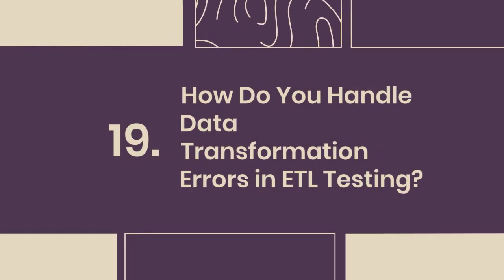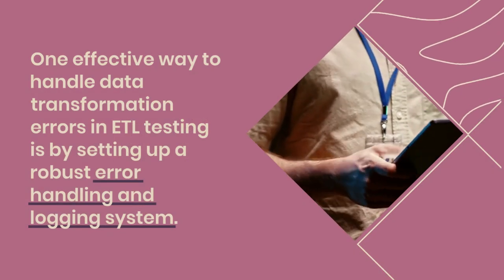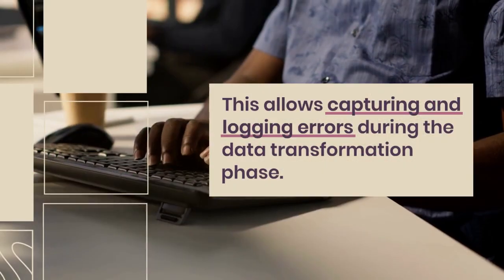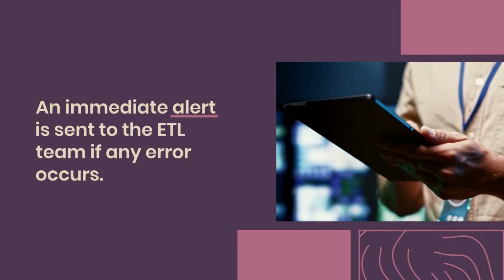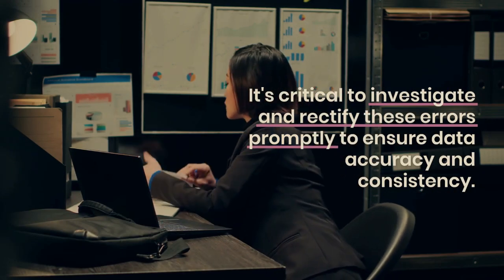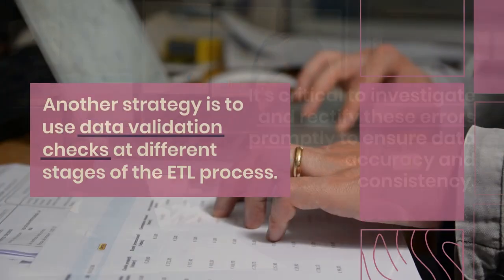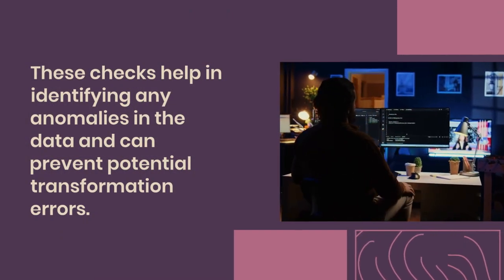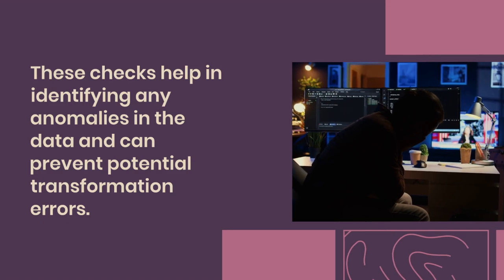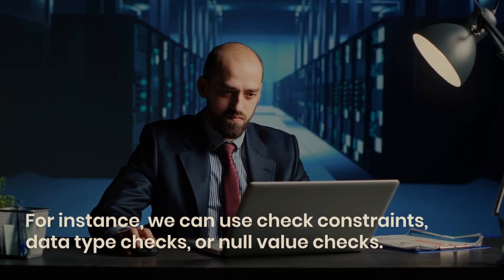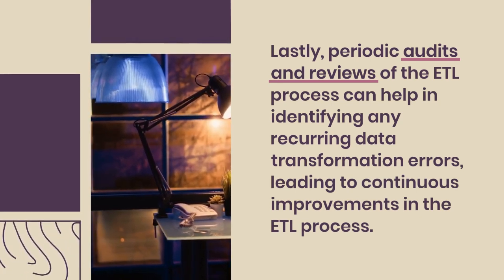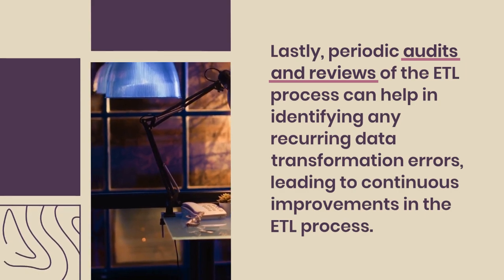Question 19: How do you handle data transformation errors in ETL testing? Setting up a robust error handling and logging system is effective — it captures and logs errors during data transformation and sends immediate alerts to the ETL team. Errors must be investigated and rectified promptly to ensure data accuracy and consistency. Data validation checks at different stages — such as check constraints, data type checks, or null value checks — help identify anomalies and prevent transformation errors. Periodic audits and reviews help identify recurring errors and drive continuous improvements.